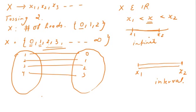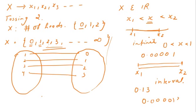If we are taking values within zero and one, there are infinitely many values — for example, 0.00001, 0.13, 0.000013, and so on. This infinite set of values within an interval cannot be mapped with the set of natural numbers. That is the fundamental difference between discrete and continuous random variables.